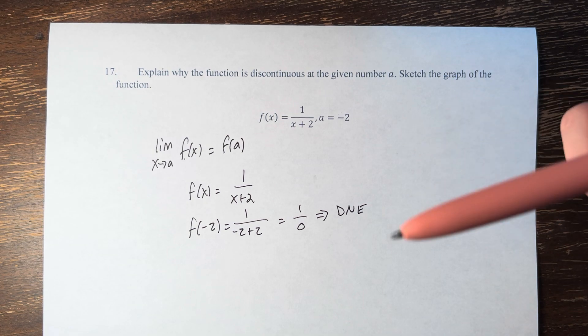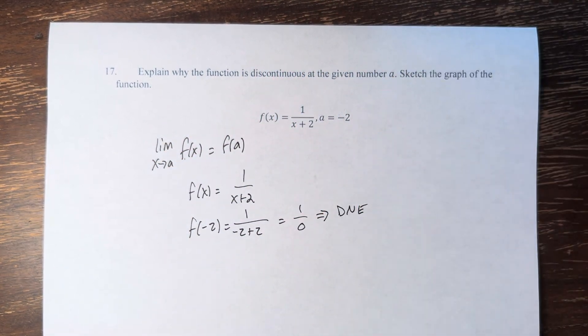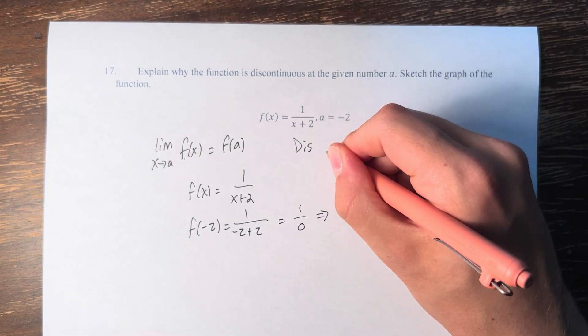Therefore, since the value of the function doesn't exist, there's no way for it to equal the limit in the first place. Therefore, we can say that the function is discontinuous at that point.